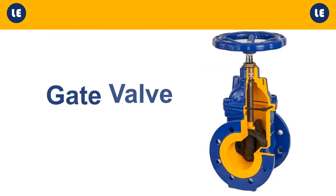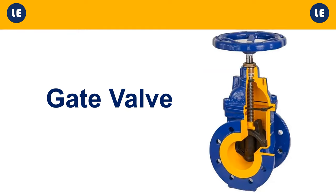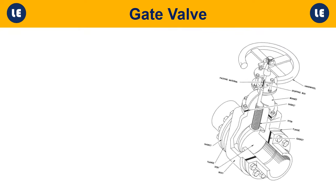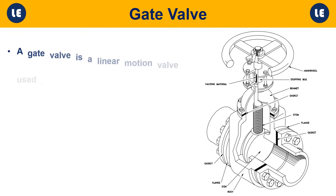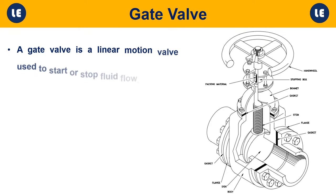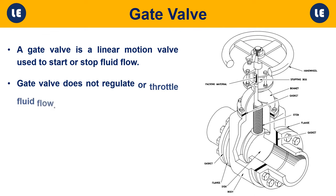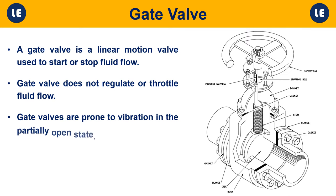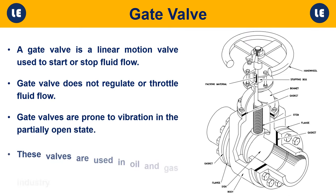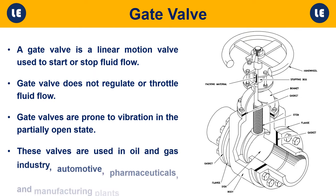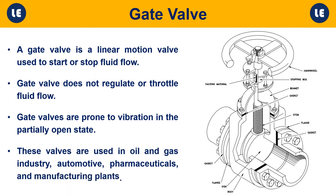Gate valve: A gate valve is a linear motion valve used to start or stop fluid flow. Gate valves do not regulate or throttle fluid flow and are prone to vibration in the partially open state. These valves are used in the oil and gas industry, automotive, pharmaceuticals, and manufacturing plants.